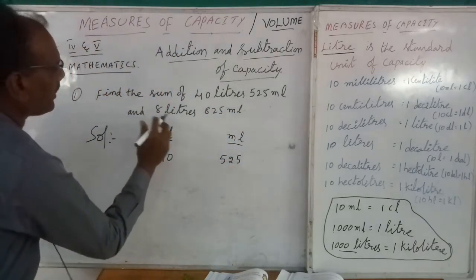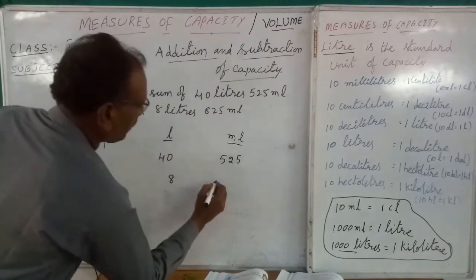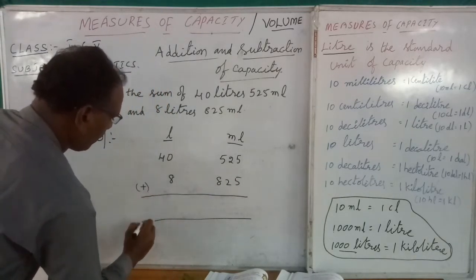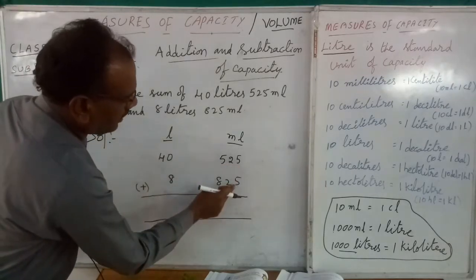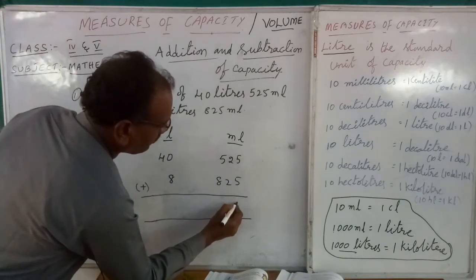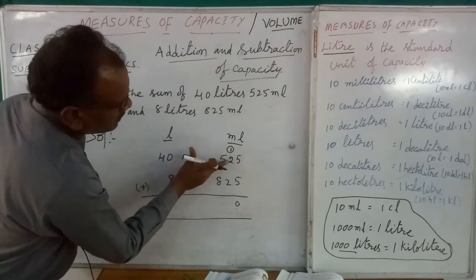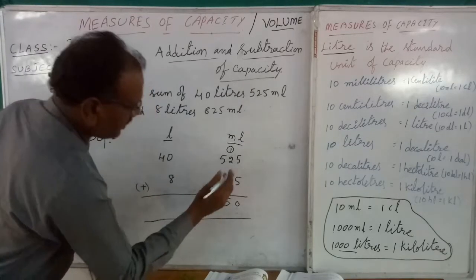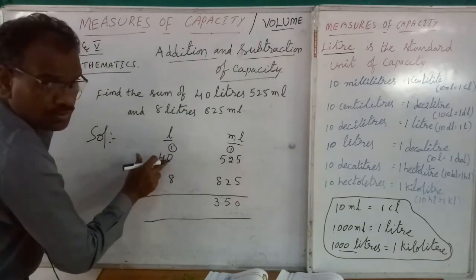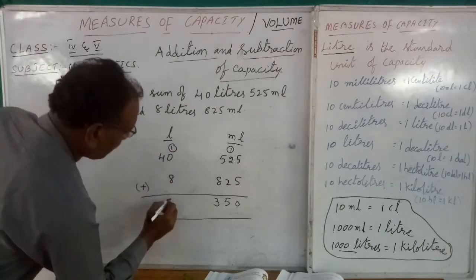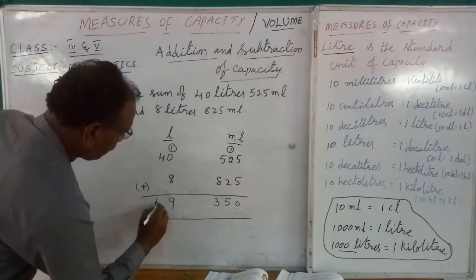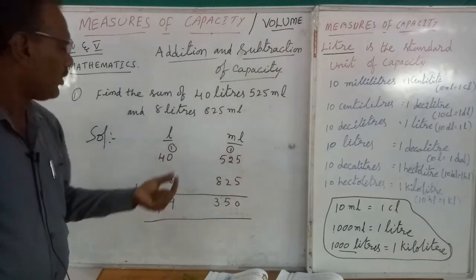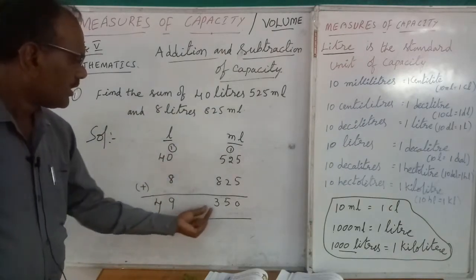Next, the second number: 8 liters in the ones place and 825 ml. Now add: 5 plus 5 is 10, write 0 carry 1. 1 plus 2 is 3, 3 plus 2 is 5, 5 plus 8 is 13, write 3 carry 1. 1 plus 0 is 1, 1 plus 8 is 9. 4 plus 0 is 4. So the total is 49 liters 350 ml.